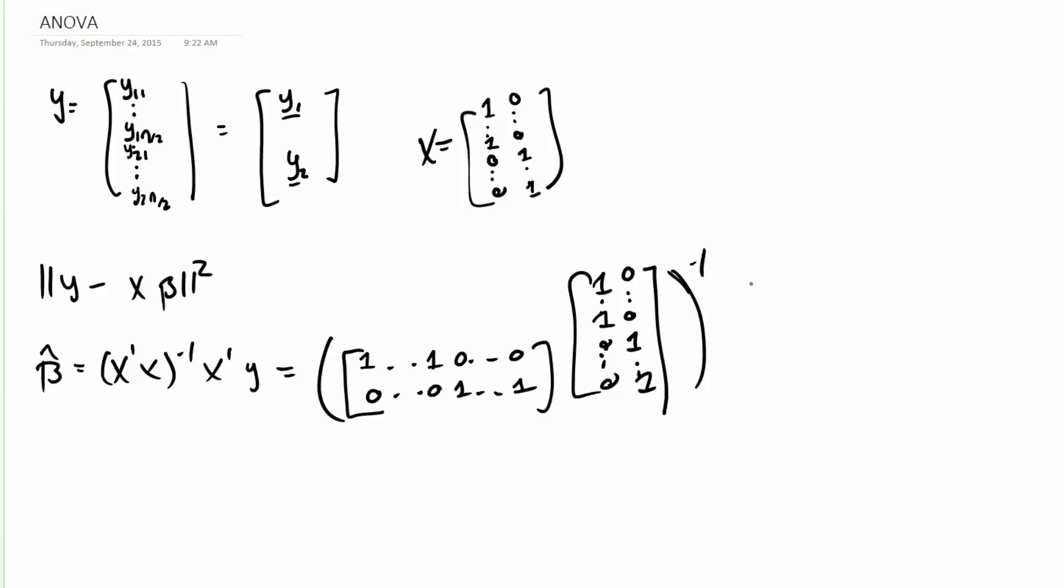And then our next component is x transpose y, which is the vector of 1s and 0s and 0s and 1s times y.